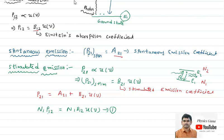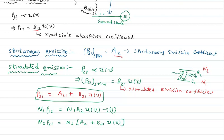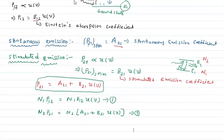The number of atoms taking transition per unit volume from energy level E2 to E1 is N2·P21. N2·P21 represents the total downward transitions. This leads to the second equation. At thermal equilibrium, there is no net exchange of heat energy.